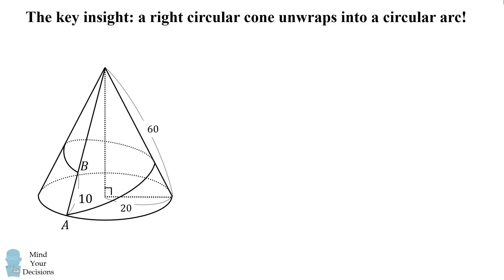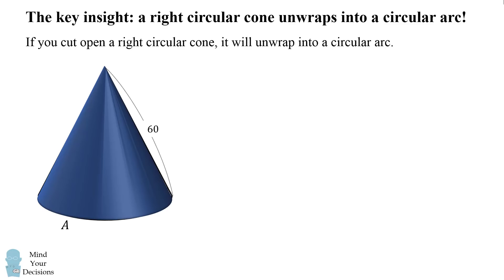So how do we solve this problem? The key insight is that a right circular cone unwraps into a circular arc. So here we have the cone-shaped mountain. And let's just imagine a general cone. If you cut open a right circular cone, it will unwrap into a circular arc.